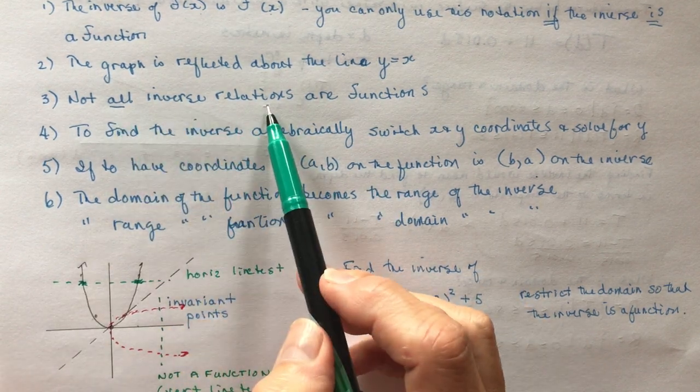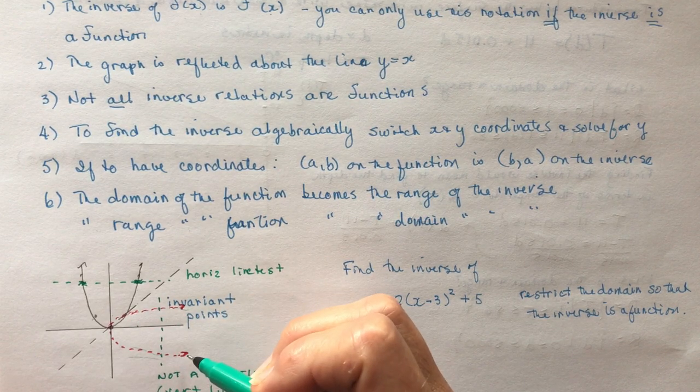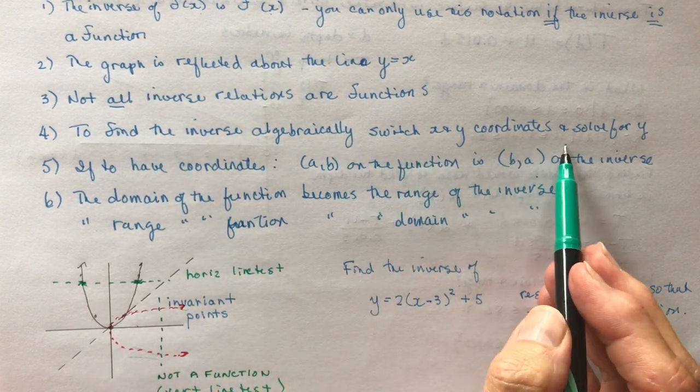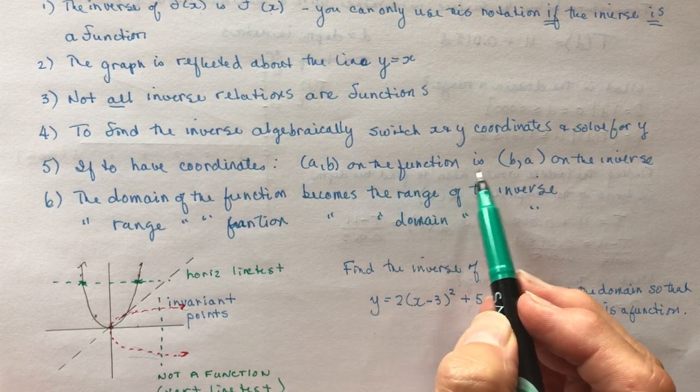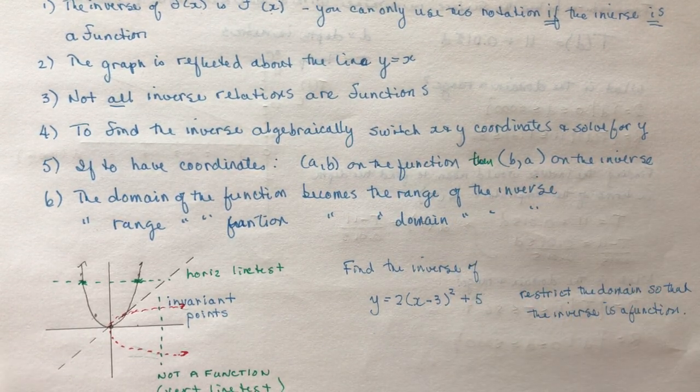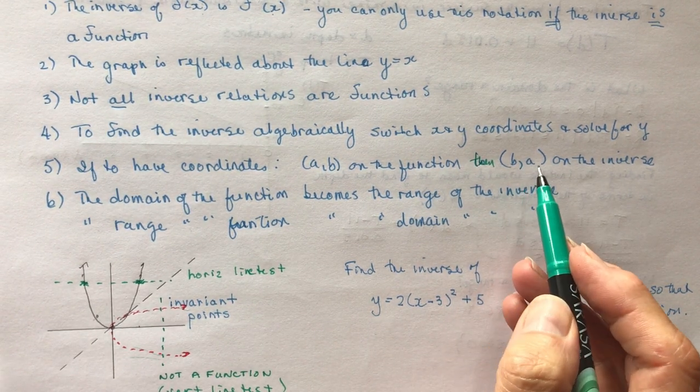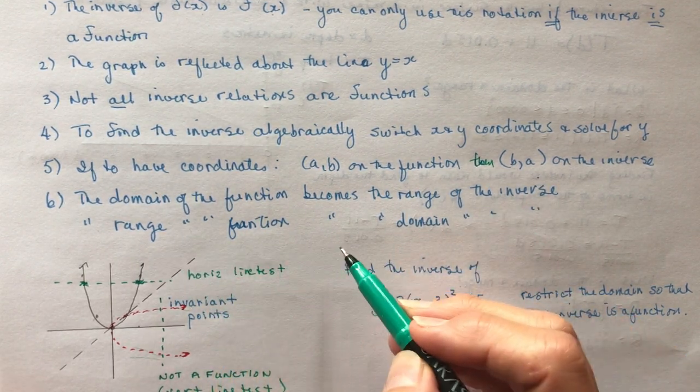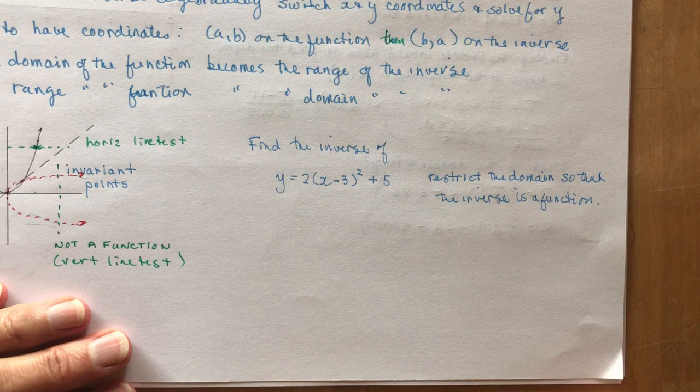So not all inverse relations are functions. If we solve for this equation, it wouldn't be a function for the very reasons we just talked about. To find the inverse algebraically, switch the x and y coordinates and solve for y. If you have coordinates (a, b) on the function, then (b, a) is on the inverse. If I had (1, 2) in the function, then (2, 1) is on the inverse. It's that simple. Just switch the variables if you have coordinates. The domain of the function becomes the range of the inverse, and the range of the function becomes the domain of the inverse.